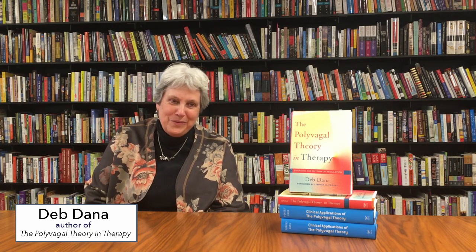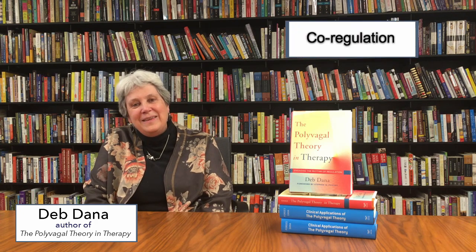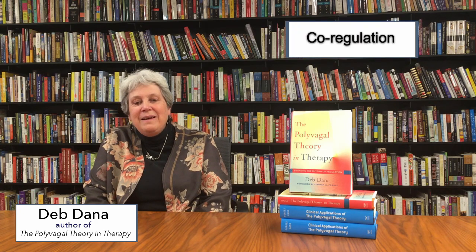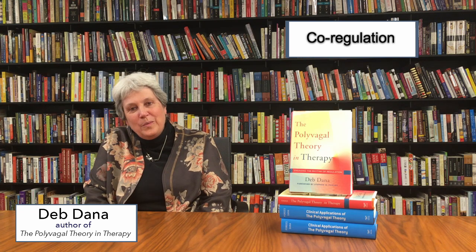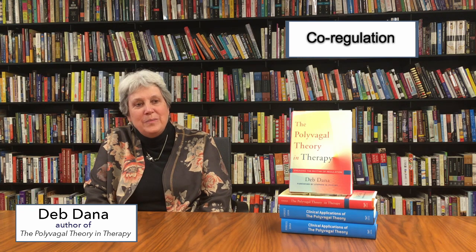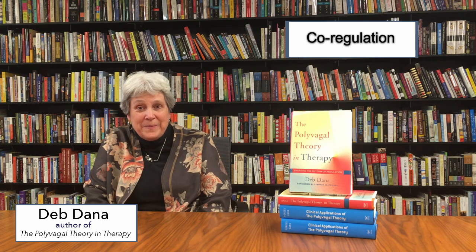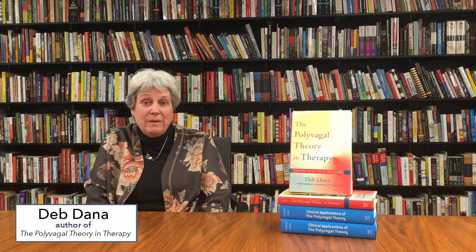The third organizing principle is co-regulation — I always put it third, but it probably should be first — because it really tells us that we are wired to be in connection with other people. Our nervous system longs to be connected to another nervous system; it's a biological imperative, which simply means that we don't survive without it. Polyvagal theory gives us a way to really work with the nervous system in coming into safe connection with other human beings.